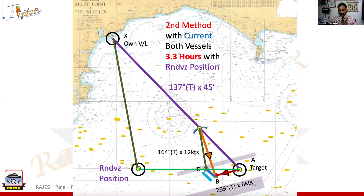If I run 3.3 hours from the target, I arrive at a position. The same 3.3 hours applied from my own vessel at X-ray also arrives at the same position — this is your rendezvous position. Your question is solved. All you have to do is find the lat-long of the rendezvous position, which I have already given as answers. My problem is solved, and I can actually stop here in your exam.